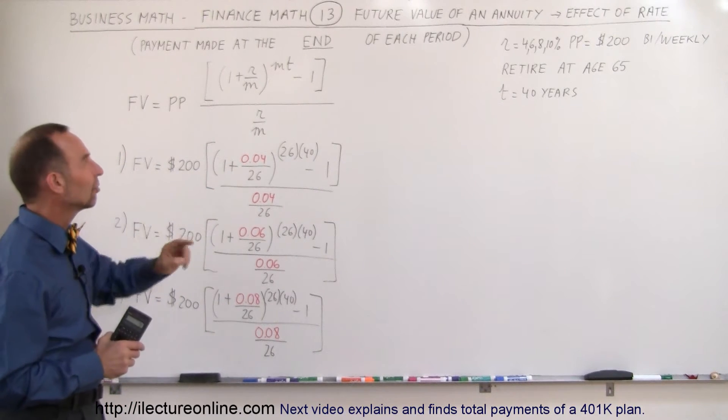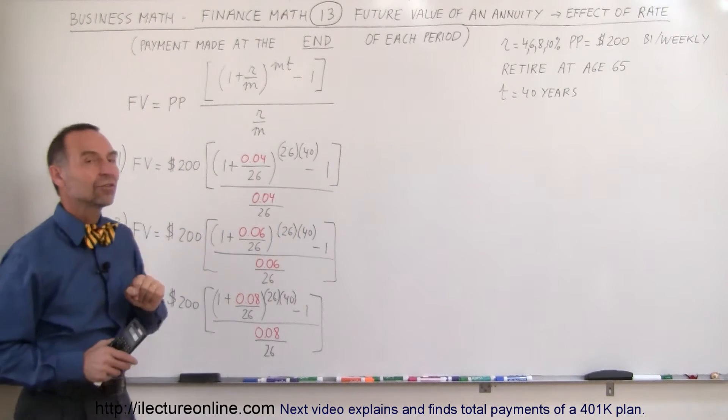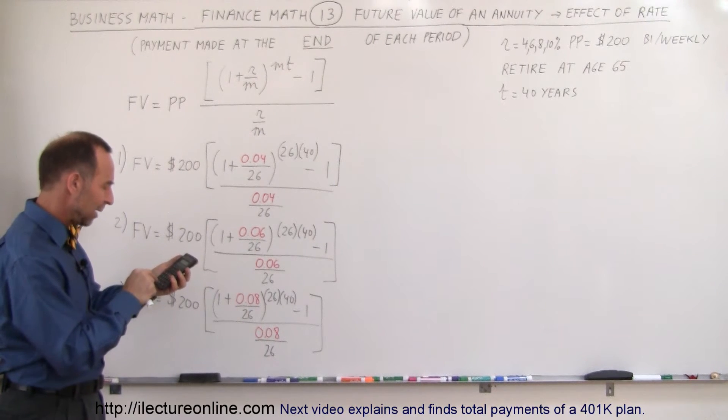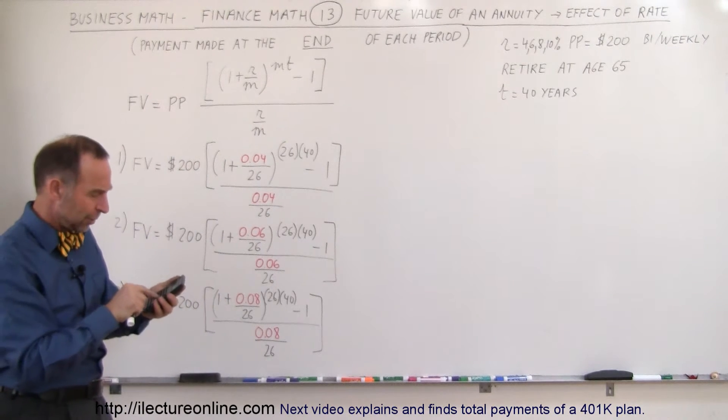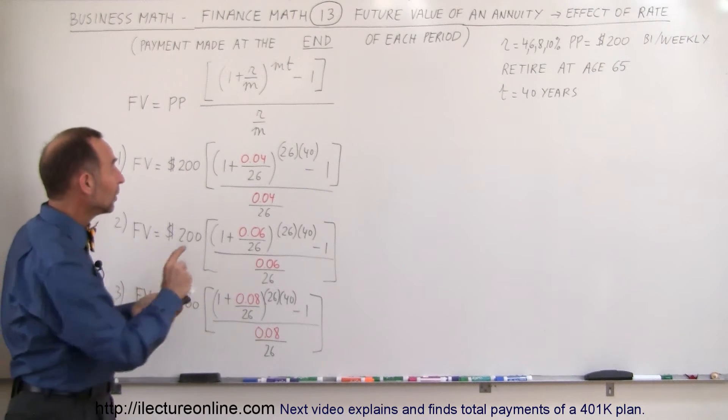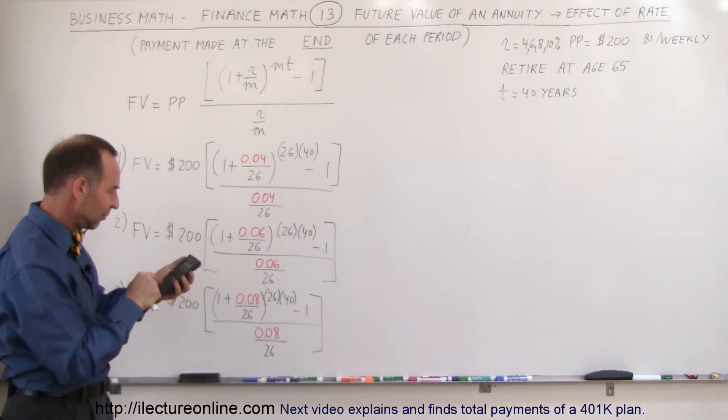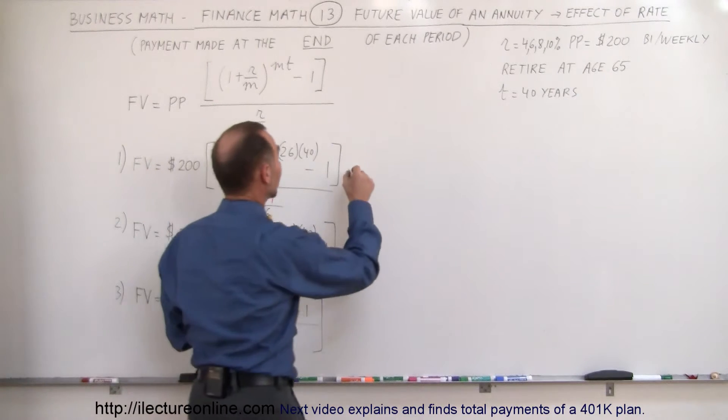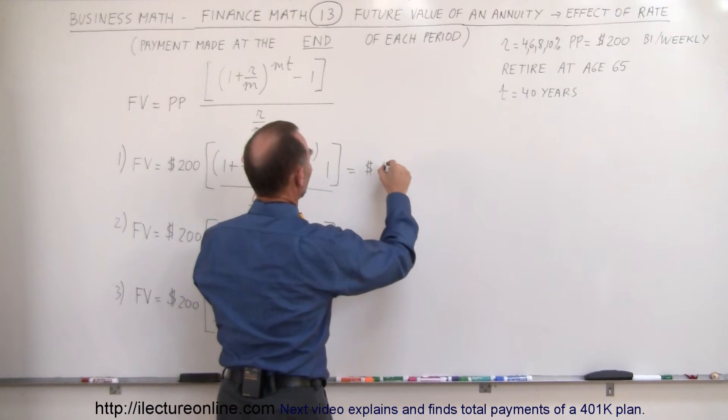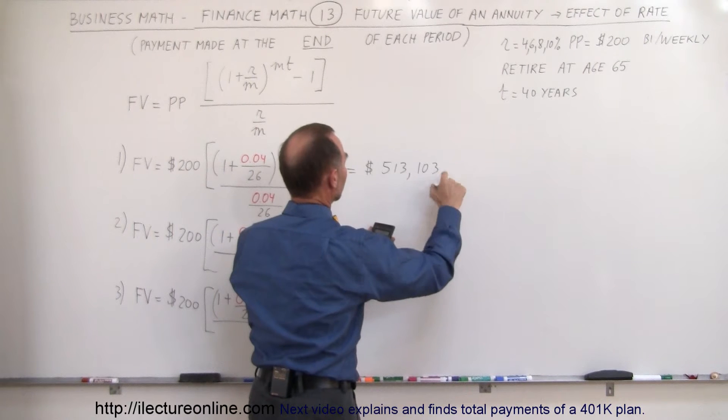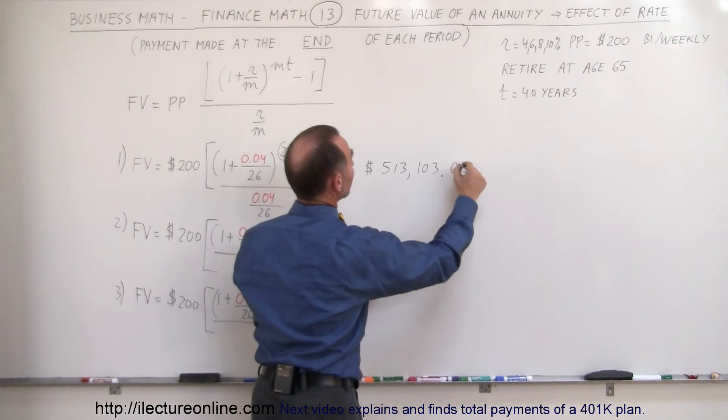Let's calculate how much money you would have in your savings account after 40 years of saving with a rate of 4%, $200 every two weeks. So we start with 0.04 divided by 26, and we add 1 to that. Then we raise that to the 26 times 40th power. We subtract 1 from that. We then divide by this quantity, which is the same as multiplying times this inverse, so times 26 divided by 0.04. And then we'll multiply it times the bi-weekly pay of $200. And the amount of money you'd have in the bank after 40 years would be $513,103.02.